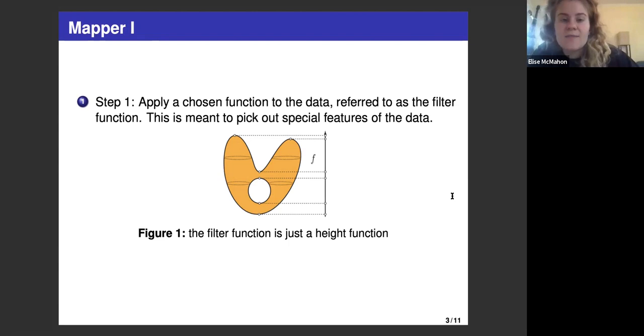The first step is to apply a chosen function to the data, referred to as the filter function. This is meant to pick out special features of the data. We might imagine that our data points are points on this orange blob, and in this picture our filter function is just measuring the height of each point.